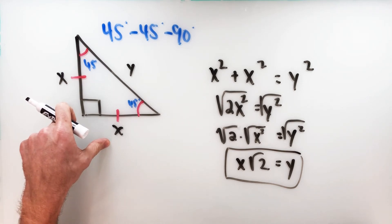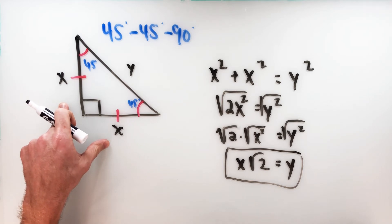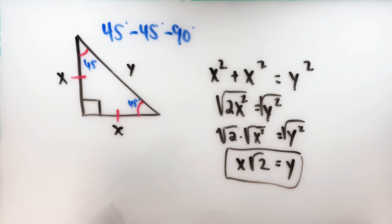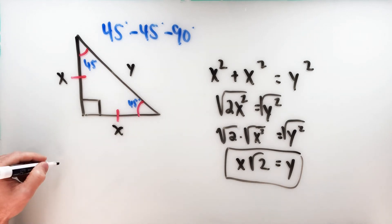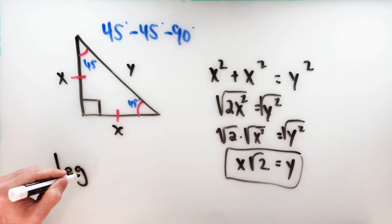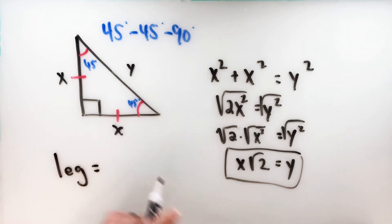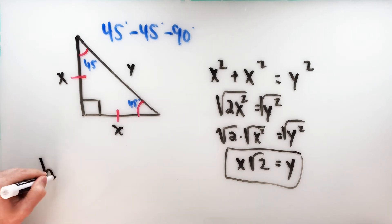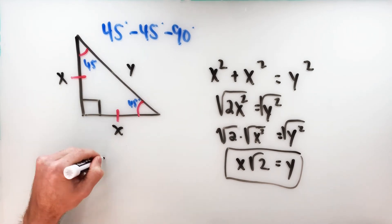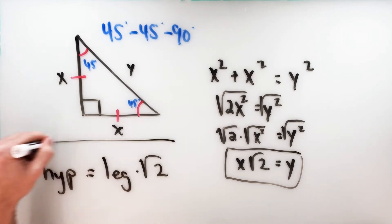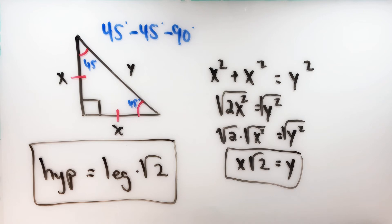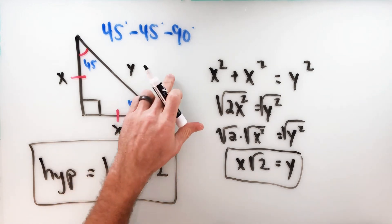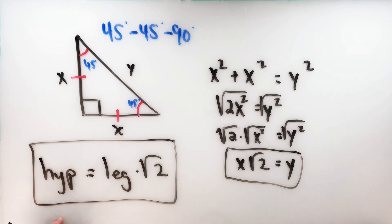This is what the 45-45-90 right triangle theorem states: in a 45-45-90 right triangle, the legs are congruent, and the hypotenuse is equal to the square root of two times the length of the leg. In easy-to-digest terms: hypotenuse equals leg times root two. This pattern holds true in all 45-45-90 right triangles, and we can use this as a shortcut to make triangle problems a little bit easier.